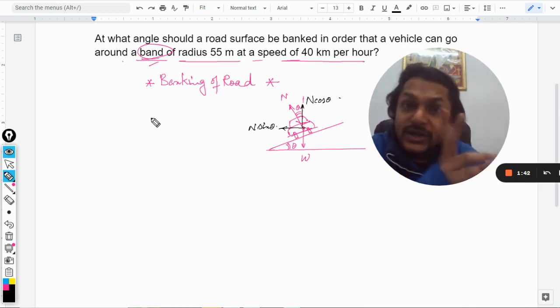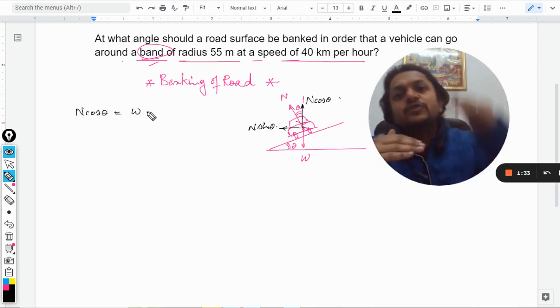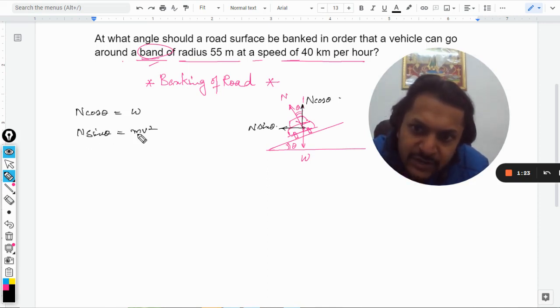N cos theta has to be equal to W, so I have two equations here. N cos theta should be equal to W because we need vertical equilibrium—neither the vehicle is going up nor going downwards into the earth, so these two forces should cancel each other. And N sin theta should be equal to the centripetal force that is provided so that the vehicle turns in a circular motion.